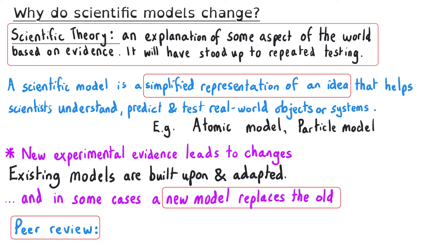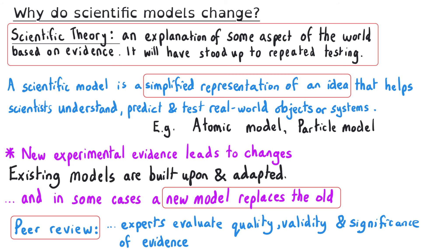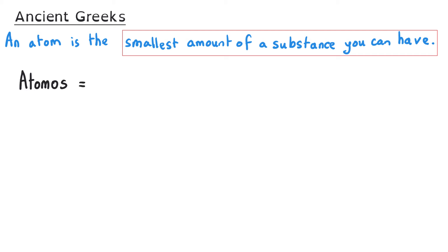Before models are officially changed they are subjected to a peer review, and this is where experts evaluate the quality, validity, and the significance of the evidence that has been put forward. And this all takes time, so adaptations and changes aren't made as soon as things are put forward as an idea. And this is very much a strength of the scientific method — the rigorous review of experimental evidence.